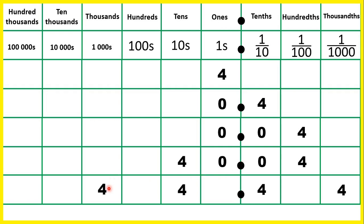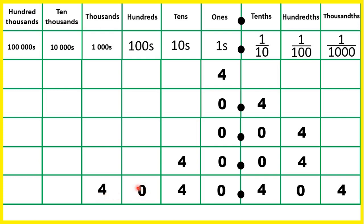Now what if we have four tenths and four thousandths? We really have zeros in all of our other place value columns. We don't need zeros at the start of a whole number, but we do need the zeros in between our non-zero digits, because these zeros are placeholders — they give the other digits the right place value. Without the zero in our hundredths, the four would be in our hundredths column, but we need to show four thousandths, which means it needs to be the third digit after the decimal point. So we need that zero in our hundredths.